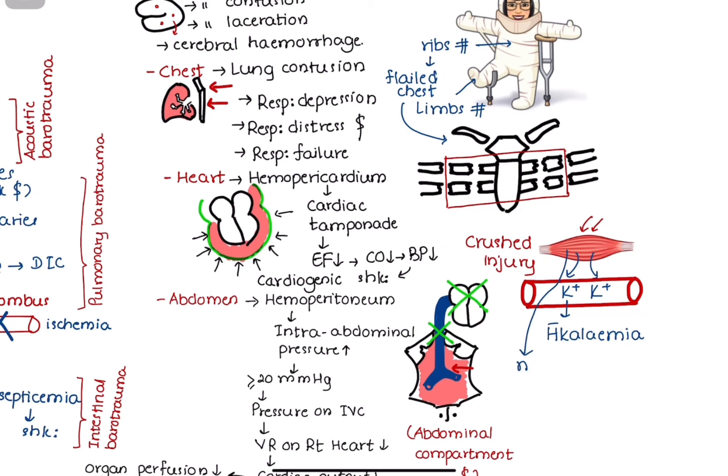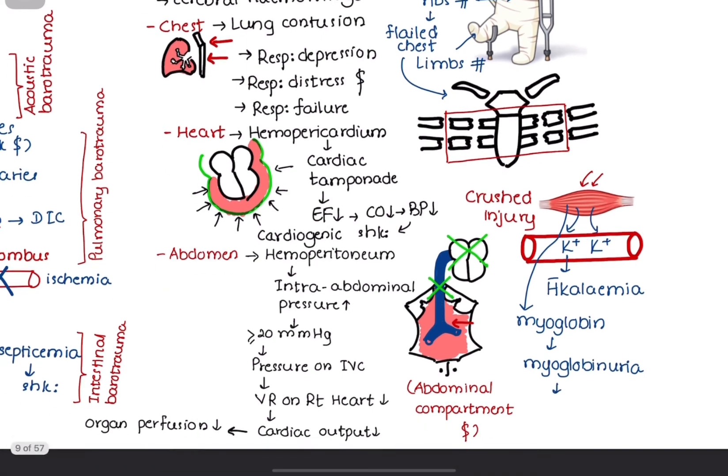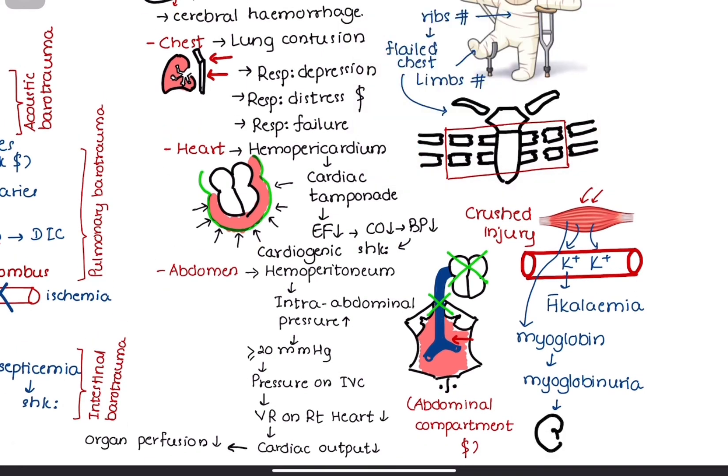Free myoglobin released from muscles is filtered by kidneys, which is known as myoglobinuria. Myoglobin can precipitate in renal tubules, leading to renal tubular damage and renal failure.